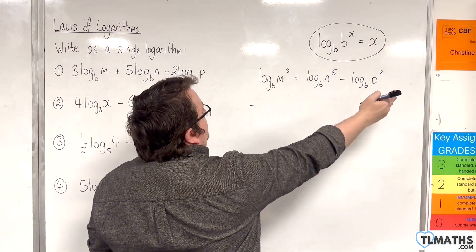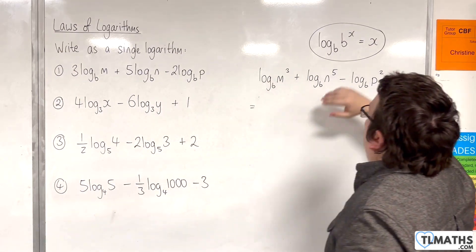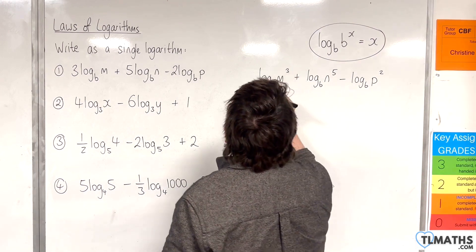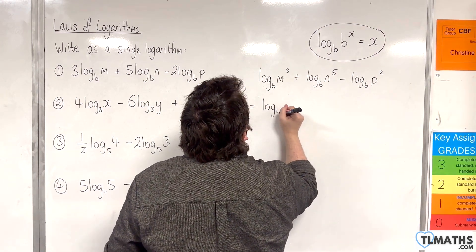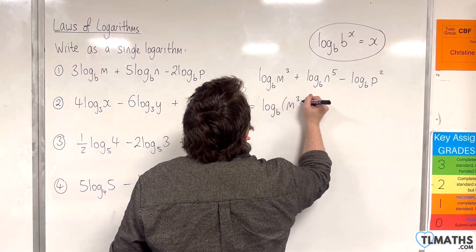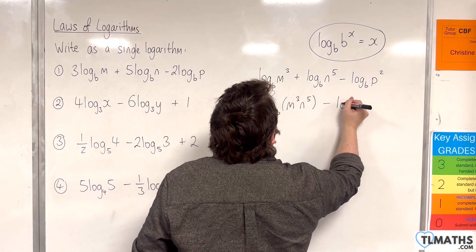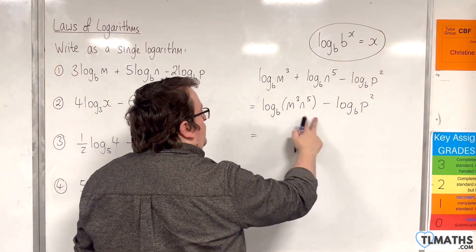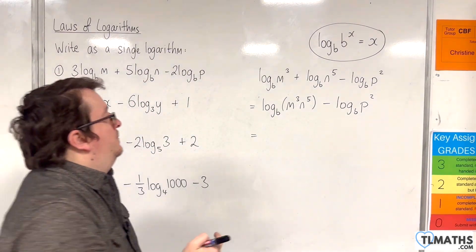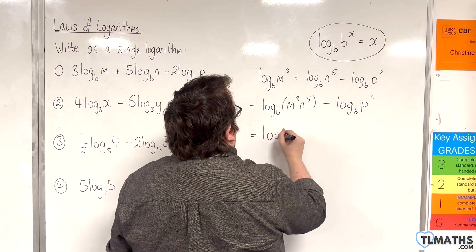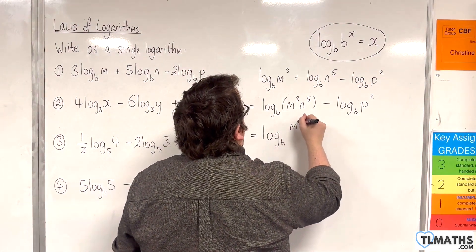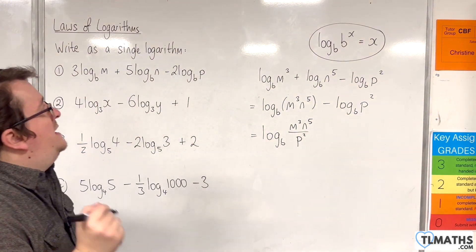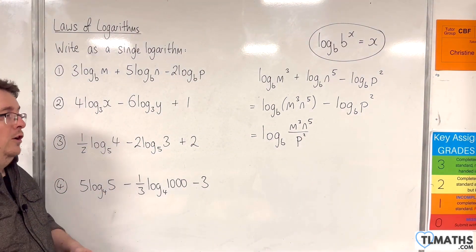Then, working from left to right, deal with the first two first. I'm going to use the product rule here, so that would be log base b of m cubed·n to the 5. And now, between these two logarithms, I can use the quotient rule. So that would be log base b of m cubed·n to the 5 over p squared. And now it is written as a single logarithm.